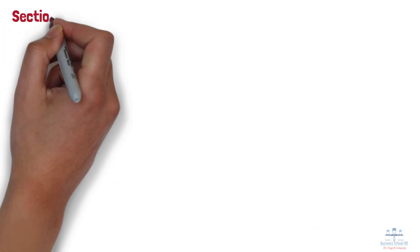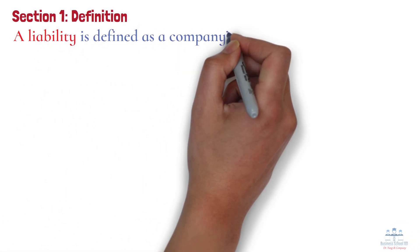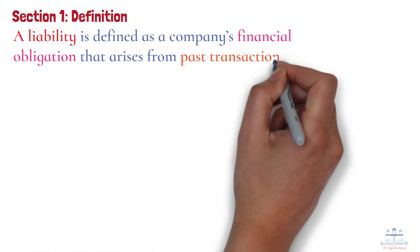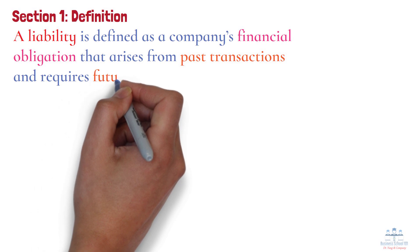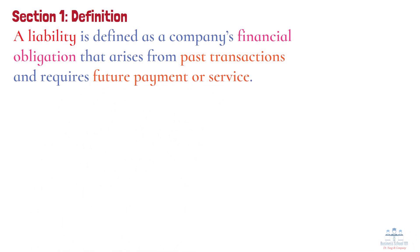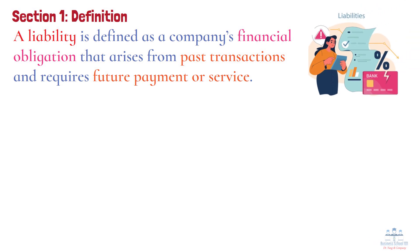Section 1: Definition. In accounting, a liability is defined as a company's financial obligation that arises from past transactions and requires future payment or service. Liabilities are essential for funding business operations and expansion, but they also represent a financial risk that must be carefully managed.